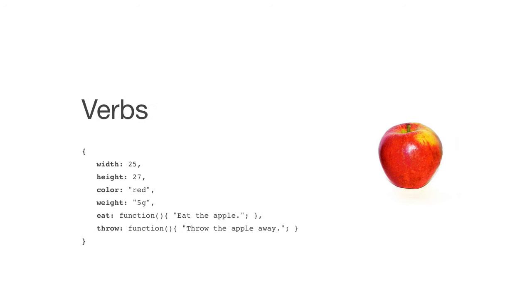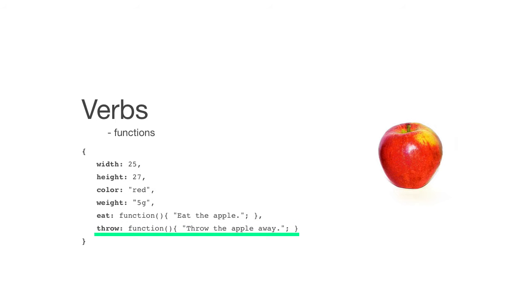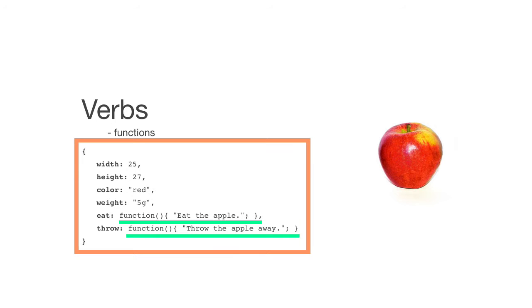Next, you have verbs. Verbs are performing an action, which is a function — that's exactly what a function is. So you have nouns, which are descriptive, and verbs, which are functions. Functions, like verbs, could be eating the apple or throwing the apple — those are physical actions. When a function is within an object, it's still a function, but we give it a different name: we call it a method. A method simply means a function that is contained within an object.